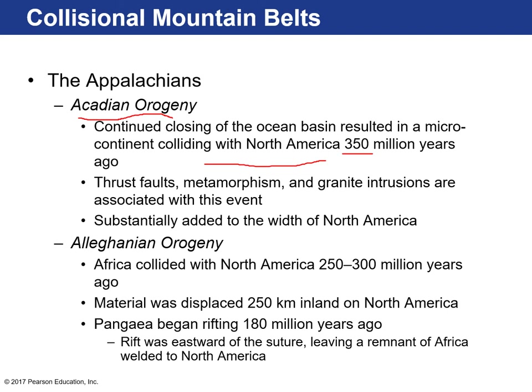There were many thrust faults, metamorphism — regional metamorphism — and granite intrusions associated with this collisional event. That substantially added another portion of continental crust to the North American plate. The last step was the Alleghenian Orogeny, where Africa — the continental plate of Africa — collided with North America about 250 to 300 million years ago. Material was displaced 200 kilometers inland of North America, which indicates how much compression occurred.